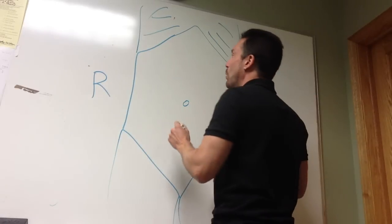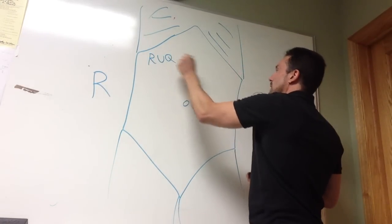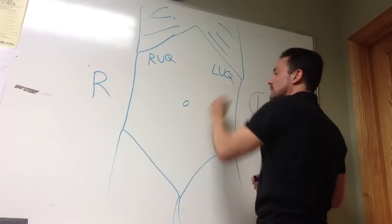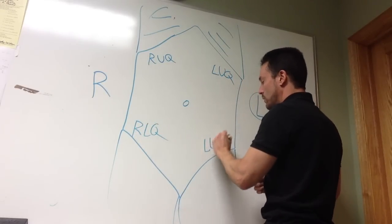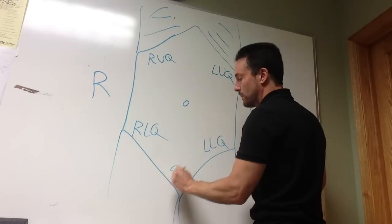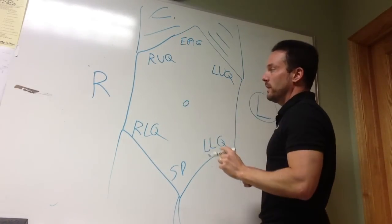We like to divide the belly into different quadrants, so right upper quadrant, left upper quadrant, right lower quadrant, and left lower quadrant. This is called the suprapubic region, and this is called the epigastric region. And in the middle is peri-umbilical.